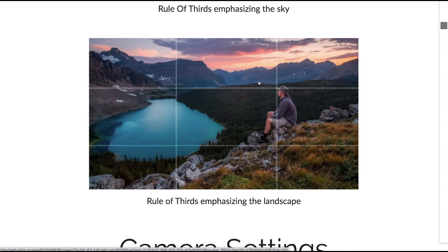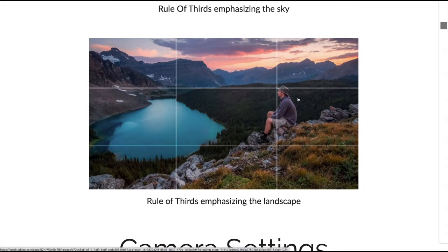This rule of thirds photo is emphasizing the landscape. The horizon is placed on the top line, which means the landscape takes up two-thirds of the photo. Again we have a background of far mountains and sky, a middle ground of the lake area, and the foreground is the person sitting on the hilltop. These two rules are easy ways to make more interesting landscape photos.